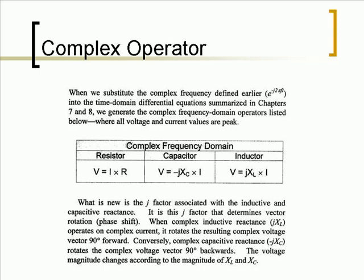When complex inductive reactance, jXL, operates on complex current, it rotates the resulting complex voltage vector 90 degrees forward. Conversely, complex capacitive reactance, jXC, rotates the complex vector 90 degrees backwards. The voltage magnitude changes according to the magnitude of jXL and jXC.